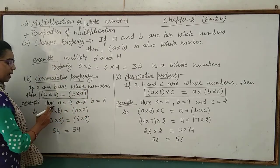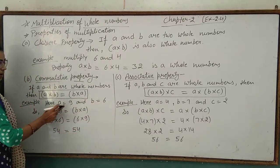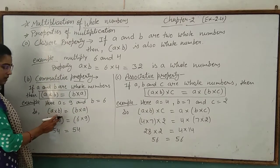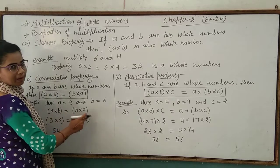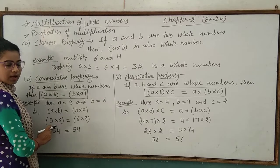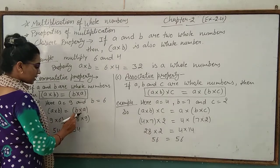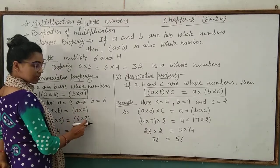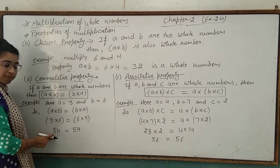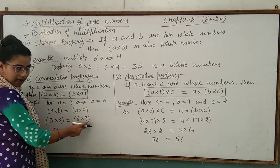Now we take an example. Here a is equal to nine and b is equal to six. We put these values into the property: a multiplied by b is equal to b multiplied by a. So nine multiplied by six equals six multiplied by nine. Nine multiplied by six is equal to fifty-four, and six multiplied by nine is also fifty-four.